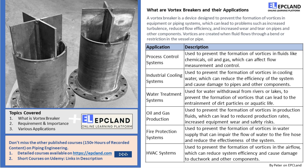Have you ever wondered how a fluid flows through a pipe and what happens when it reaches a bend or a corner? When a fluid moves through a piping system, it creates vortices, which can have several negative effects on the system. This is where vortex breakers come into play.